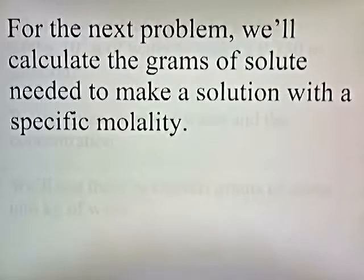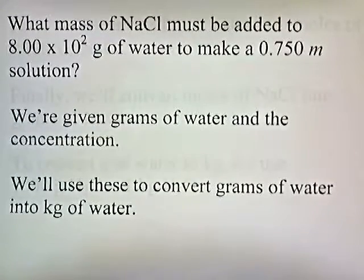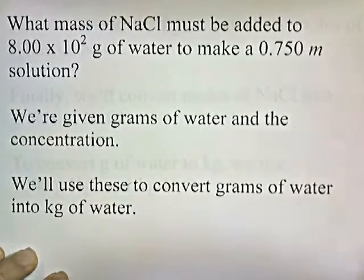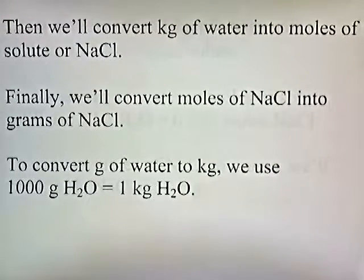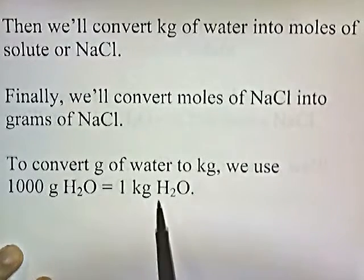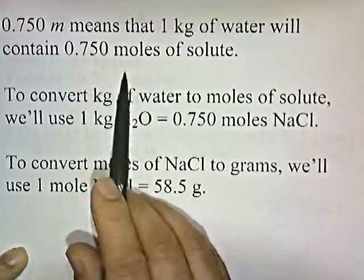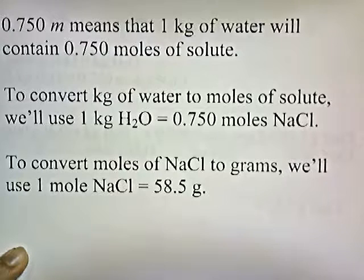For the next problem, we'll calculate the grams of solute needed to make a solution with a specific molality. What mass of NaCl must be added to 800 grams of water to make a 0.75 molal solution? We're given 800 grams of water and the concentration 0.75 molal. We're going to convert grams of water into kilograms of water, then convert kilograms of water into moles of NaCl. The 0.75 molal means 1 kilogram of water will contain 0.75 moles of solute, so 1 kg of H2O equals 0.75 moles of NaCl.